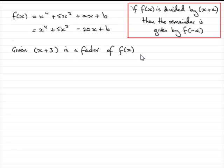Given that x plus 3 is a factor of f(x), then by the remainder theorem, we would expect the remainder to be 0. In other words, if I've got x plus 3, a being 3, it would mean that f of minus 3 must equal 0.